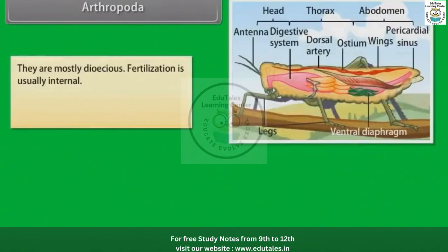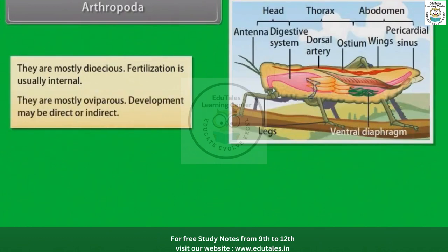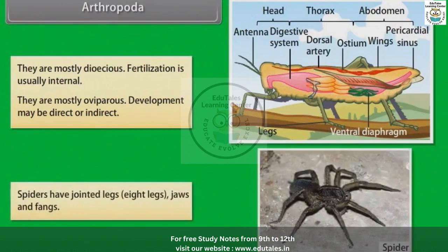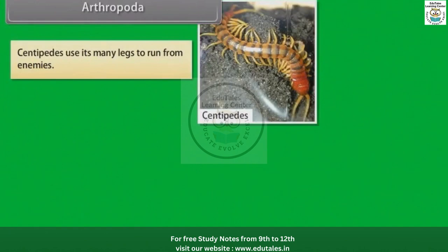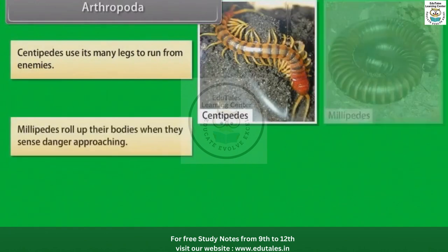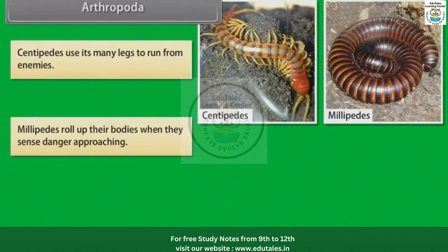Arthropods are mostly dioecious. Fertilization is usually internal. They are mostly oviparous. Development may be direct or indirect. Spiders have jointed legs — eight legs, jaws and fangs. Centipedes use their many legs to run from enemies. Millipedes roll up their bodies when they sense danger approaching.